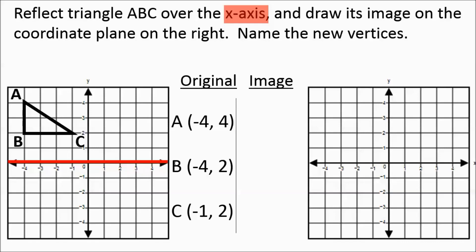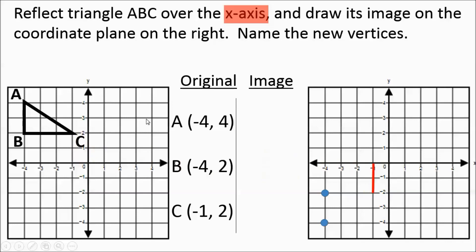Some students might notice that this triangle is in quadrant two, and its reflection is going to be in quadrant three. Point A is currently 4 above the x-axis, so its reflection is going to be 4 below. Point B is 2 above the negative 4 on the x-axis, so its reflection is going to be 2 below. Point C is 2 above negative 1 on the x-axis, and its reflection would be 2 below. And there's the reflection.